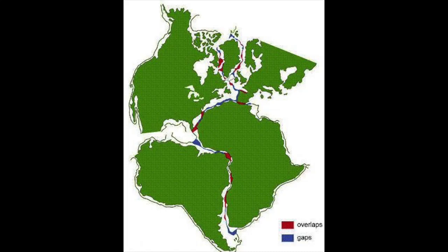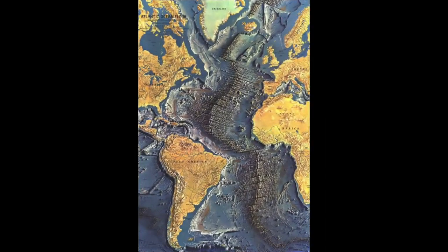They rejected it on three things: one, it lacked a mechanism — what was driving the continental drift; two, he didn't have fossil or chemical records or evidence to go along with it; and three, he had overestimated the spread. He thought it was 250 centimeters per year, and that's actually a hundred times greater than what we now know is only about 2.5 centimeters per year. Alfred Wegener didn't live long enough to actually see that he was correct — that the continents are drifting around on this planet.